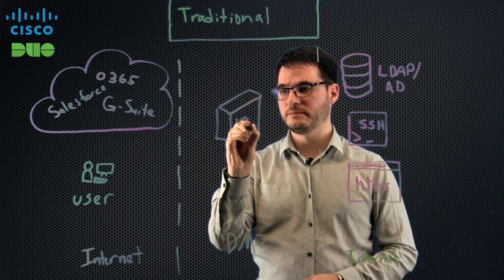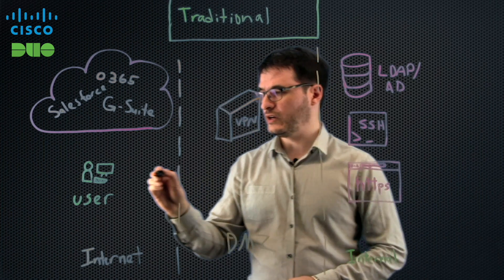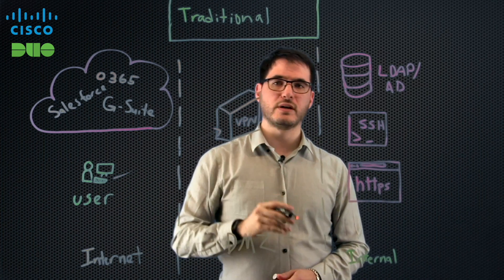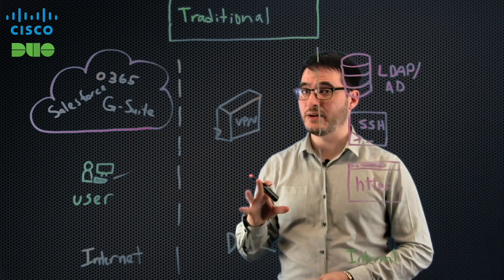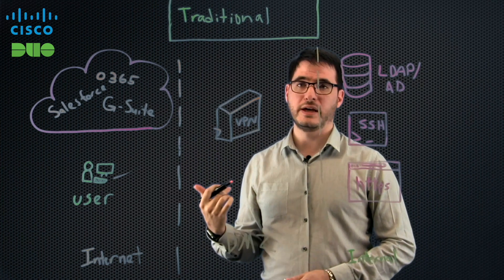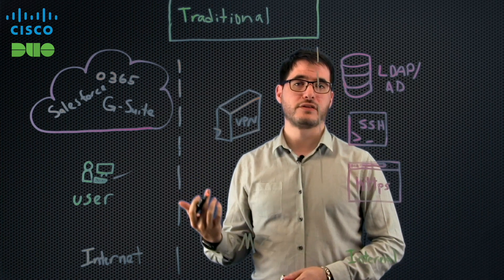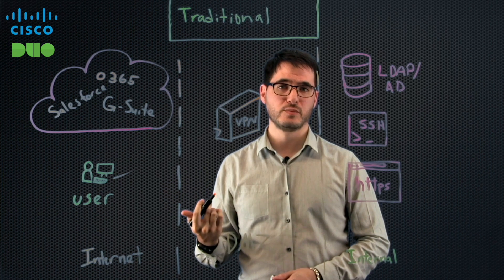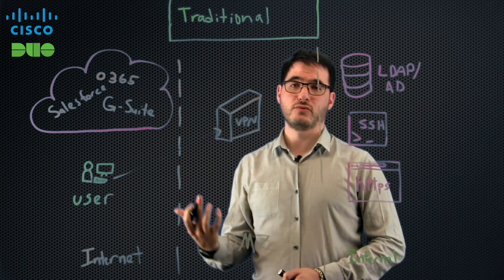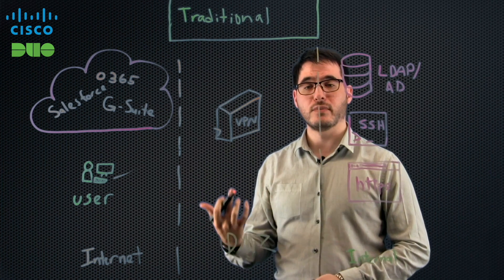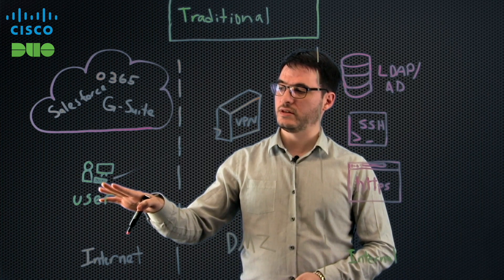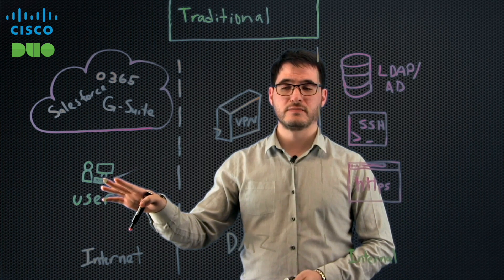So here's our VPN, and our user is going to connect to that. Now we're going to do some kind of verification there. Traditionally that was just username and password. Then two-factor authentication was invented, which helped us to do a little bit of extra verification on our users. And now we have what we call MFA, or multi-factor authentication, where we might be looking not just at the user, but also at their device.